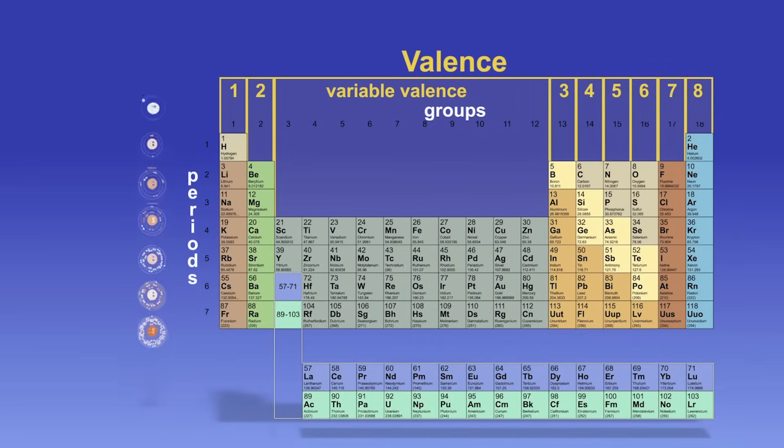The periods display the number of electron shells that are present in the atom. We will not get into much detail about this, but notice that as you move down through the periods, the number of electron shells will increase.